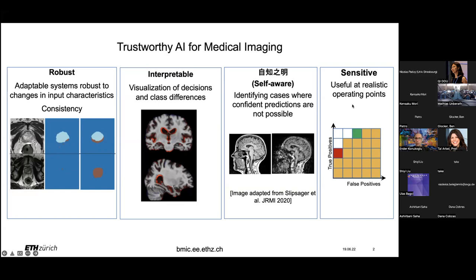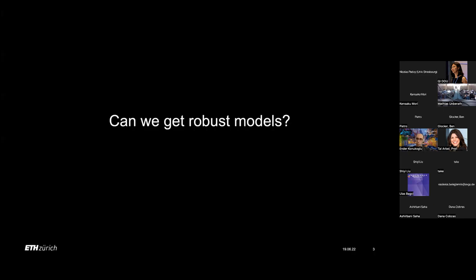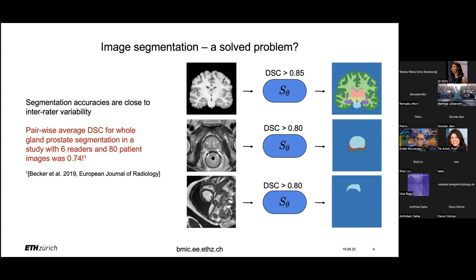And the last adjective is sensitivity: can we actually create models that can really operate at useful points? I want to delve into robustness and the sensitive model and try to give you how I see the field, what we've done, and what is still missing in my opinion. We can start with the first one. The question we've been asking for the last four or five years is: can we actually get truly robust models? This is probably most easily explained by image segmentation. Most people see this as a rather solved problem for most anatomical structures.